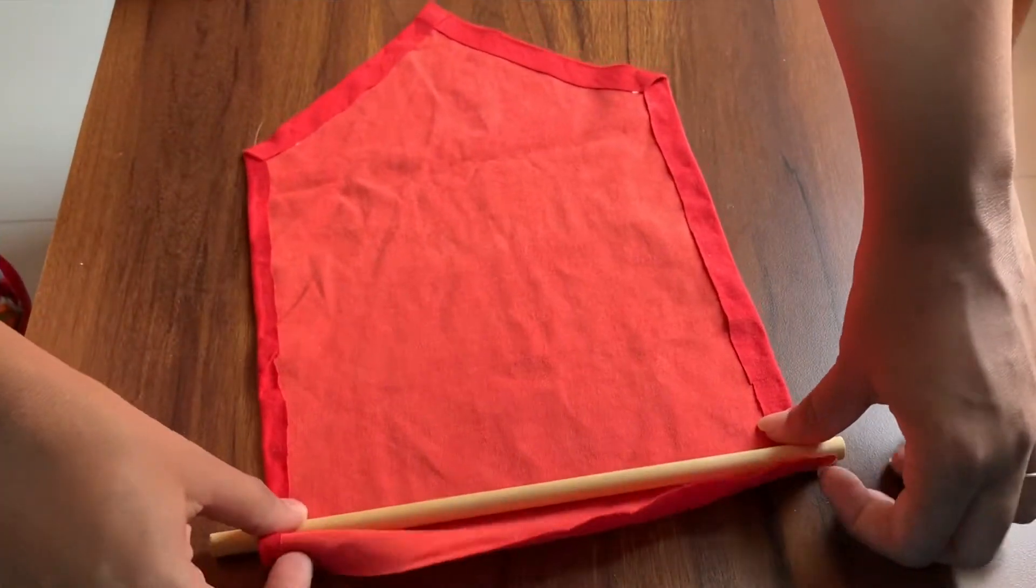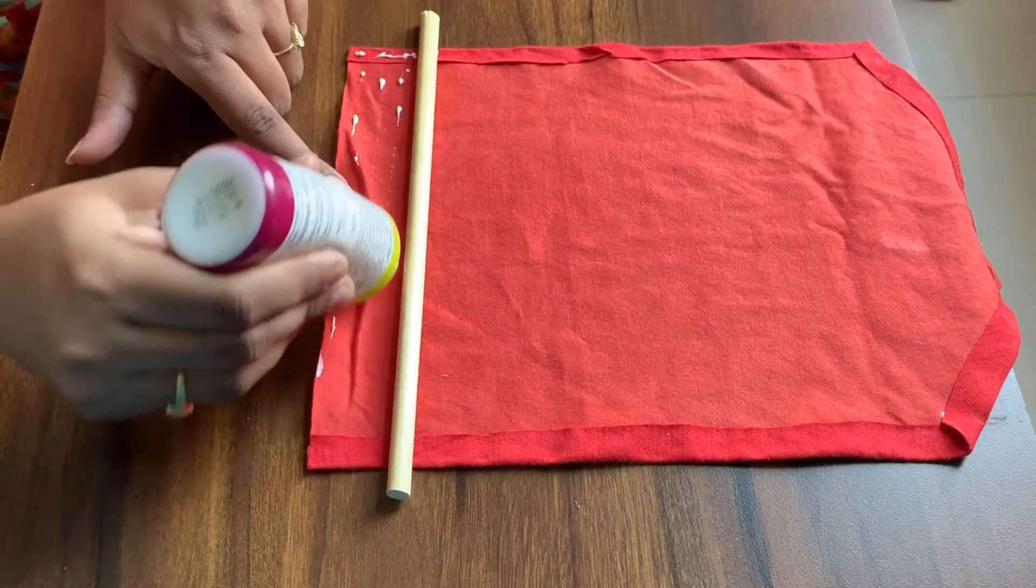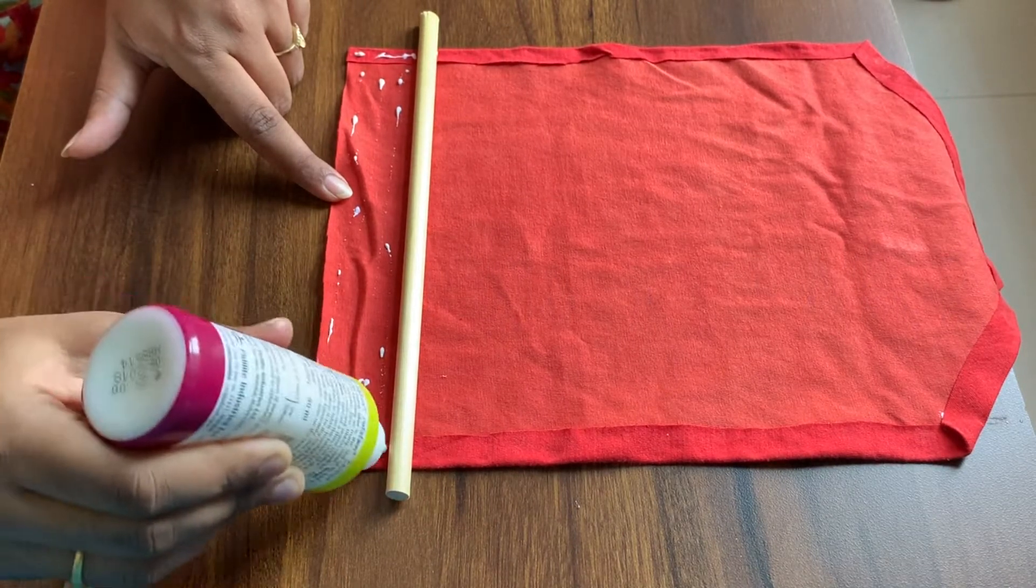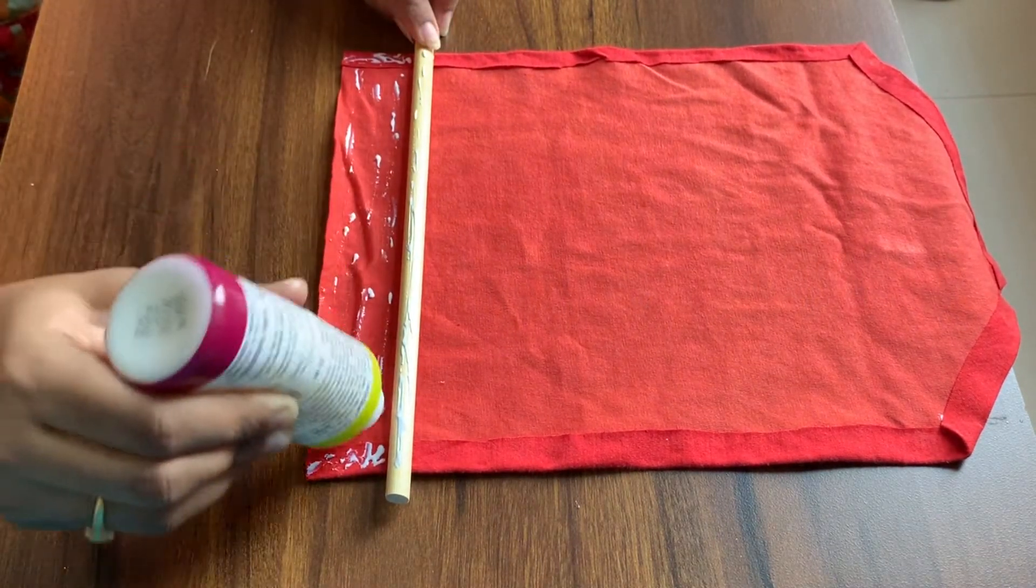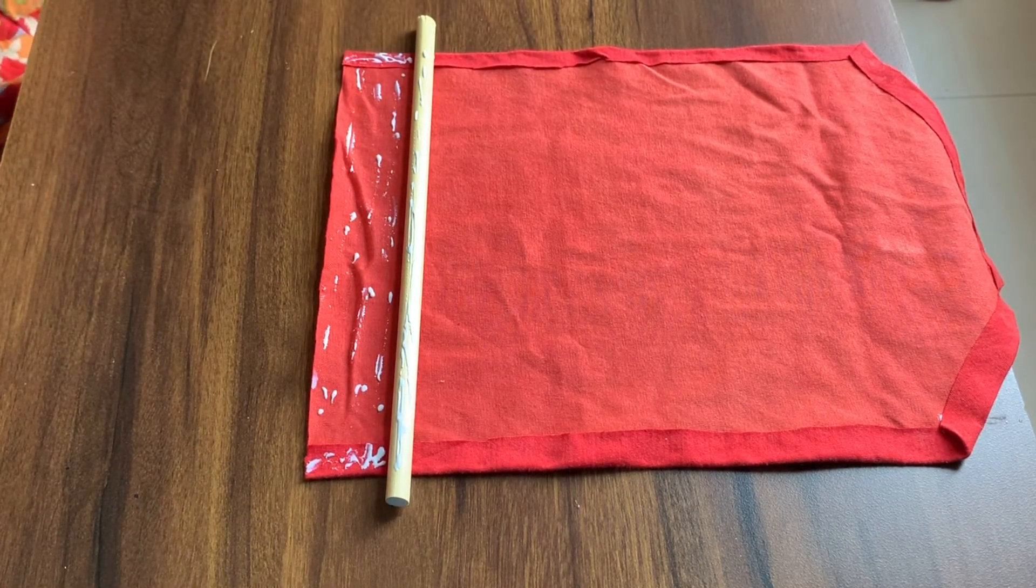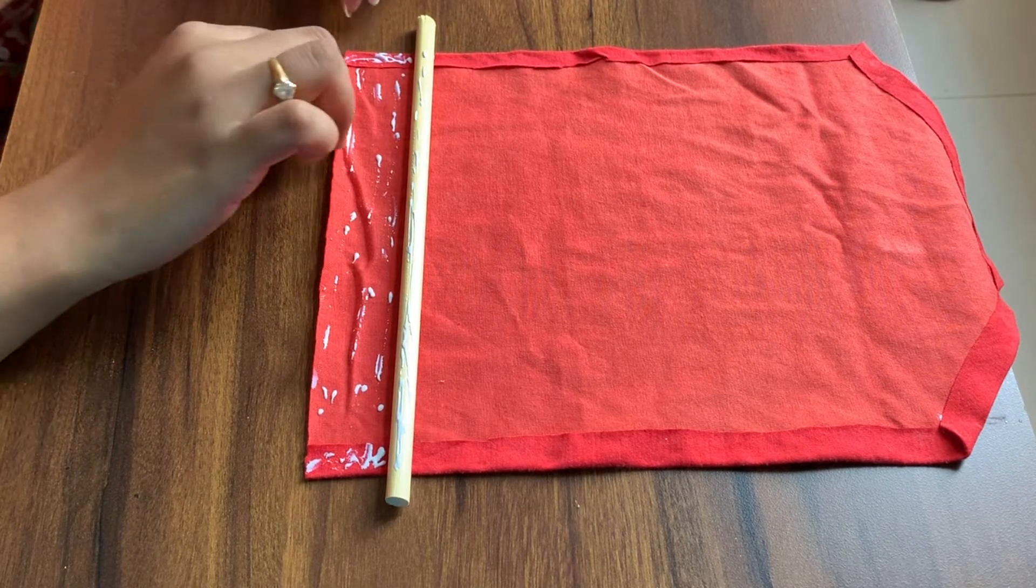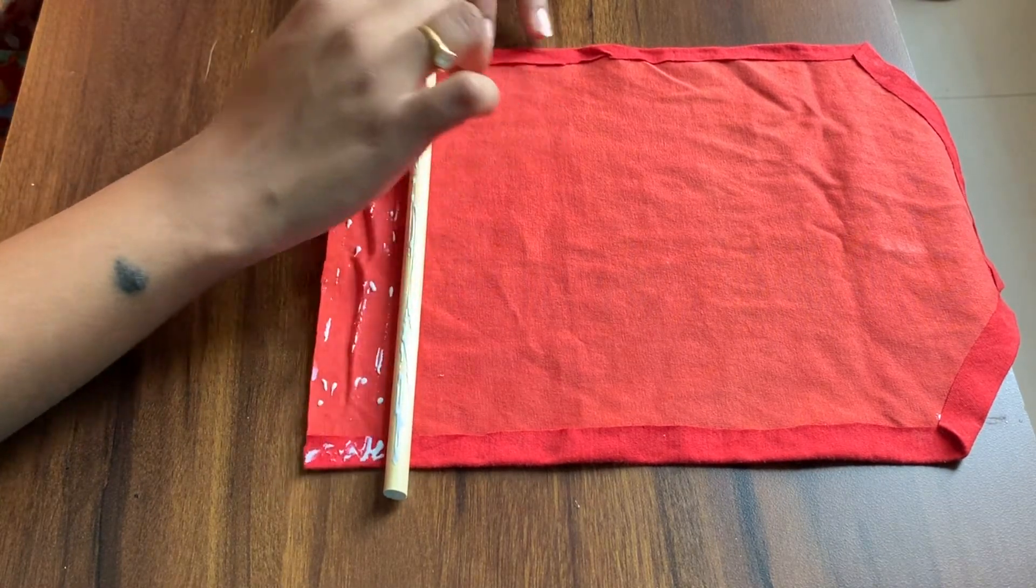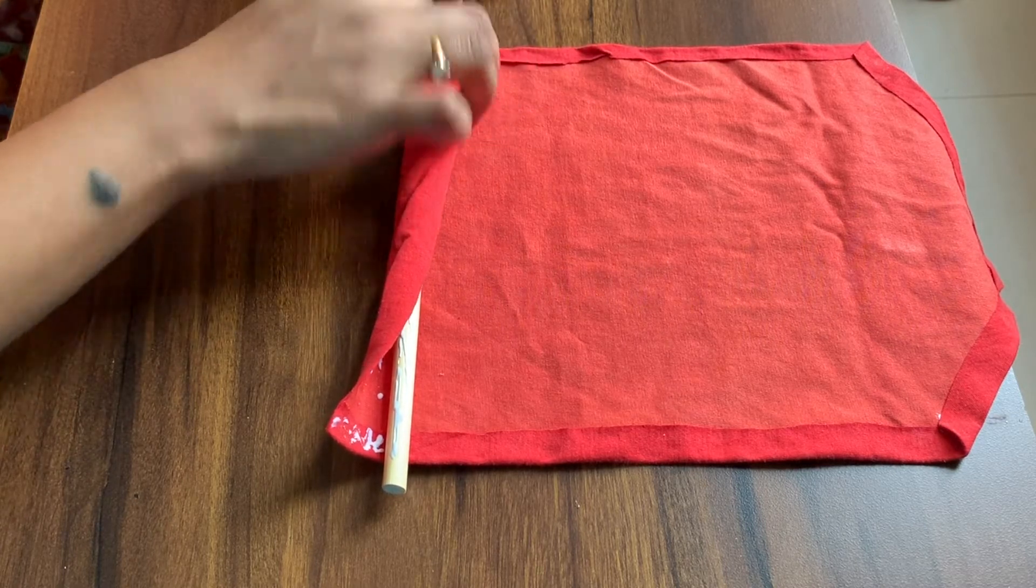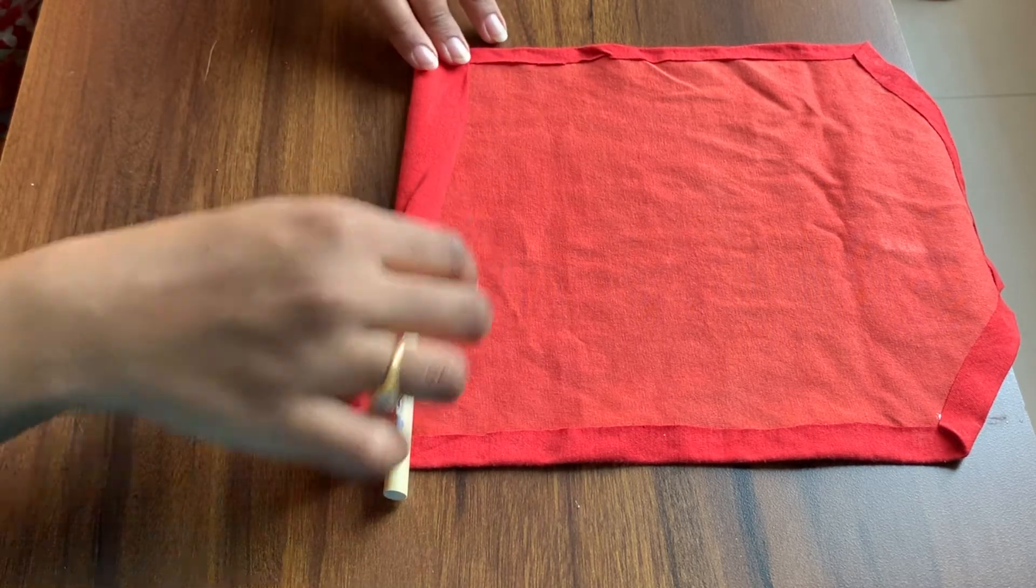Now we will take a bamboo stick. Basically we will attach this banner to this stick. If you don't have bamboo stick, then you can use a wooden stick. You can even use a hanger. So I have also put it with Fevicol help. And this is our banner ready.